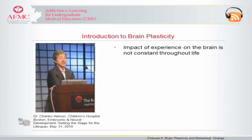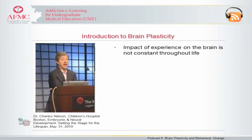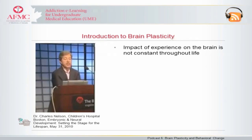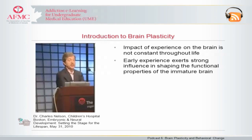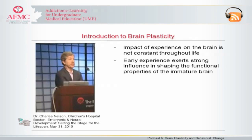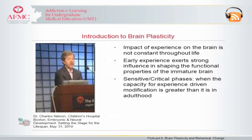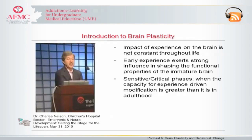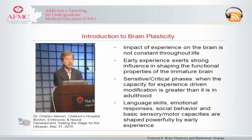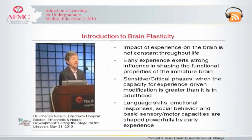Does the structure of experience work its way into the structure of the brain, and if so, how? We think of this as neuroplasticity. We know that the impact of experience on the brain is not constant throughout life. Early experience often exerts a particularly strong influence in shaping the functional properties of the immature brain. Many neural connections pass through a period of development when the capacity for experience-driven modification is greater than in adulthood — these phases are referred to as sensitive or critical periods. Language skills, emotional responses, social behavior, as well as sensory and motor capacities are shaped powerfully and permanently by early experience.